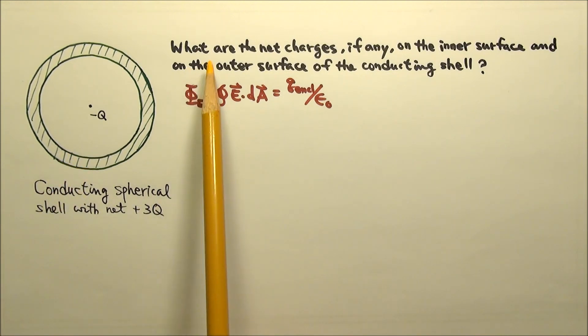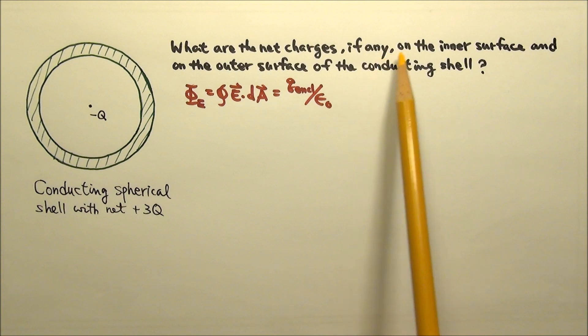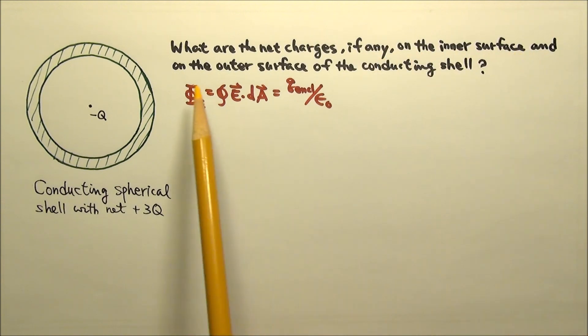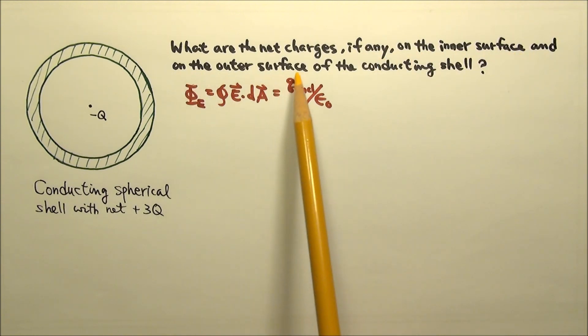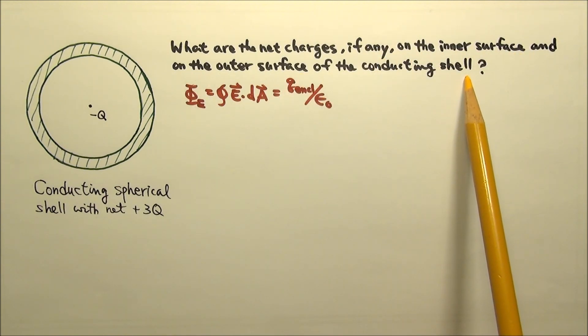What are the net charges, if any, on the inner surface and on the outer surface of the conducting shell?